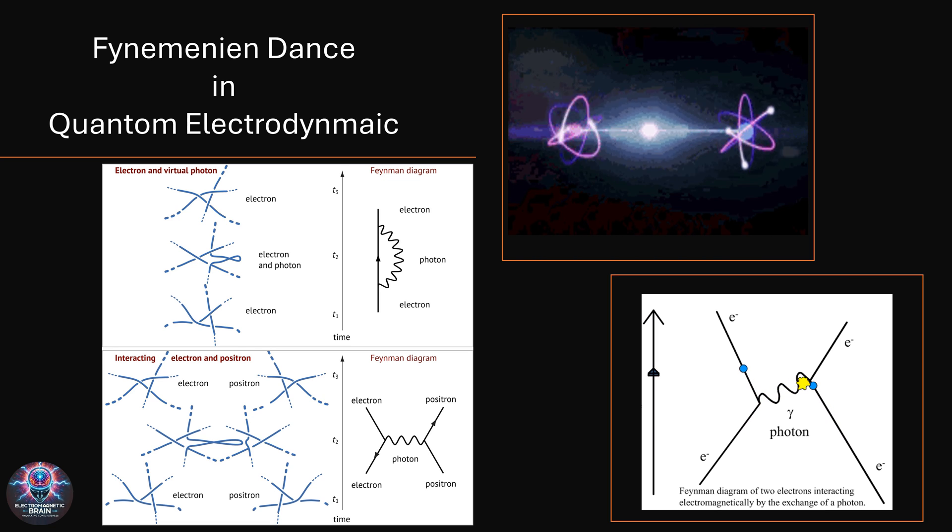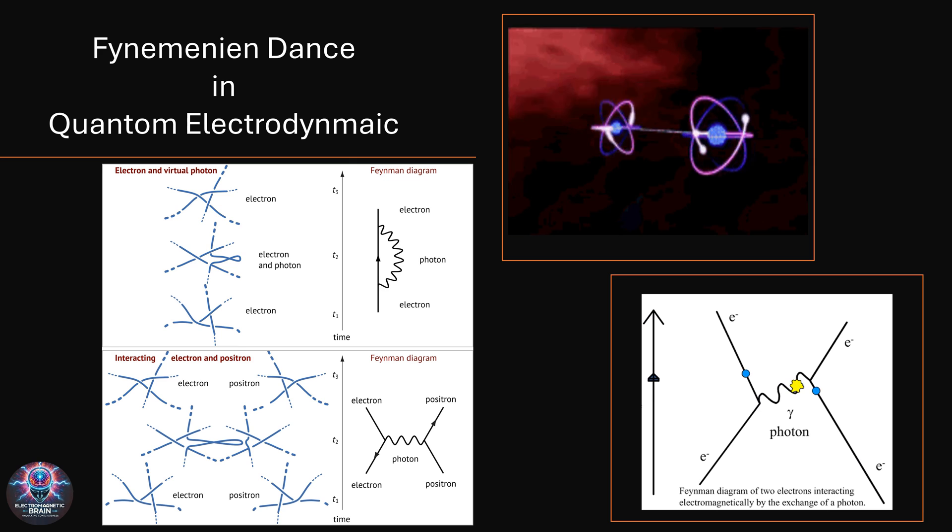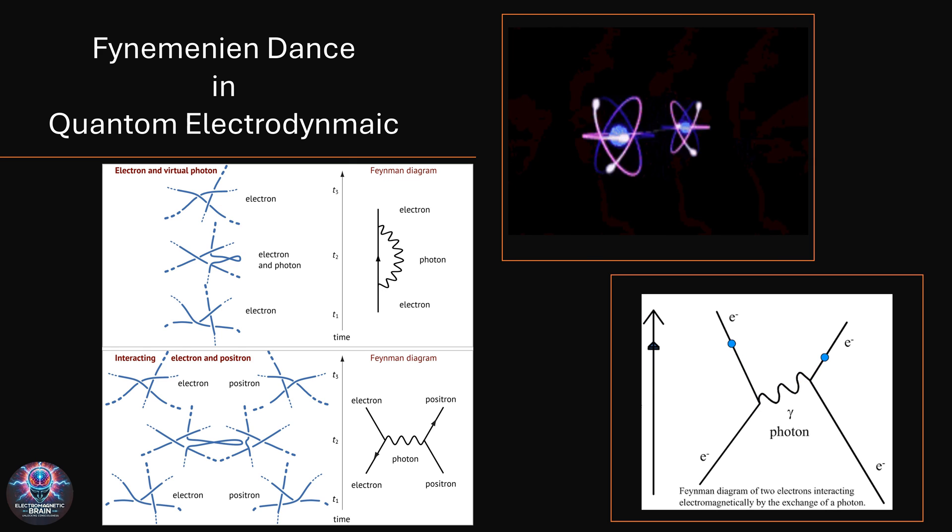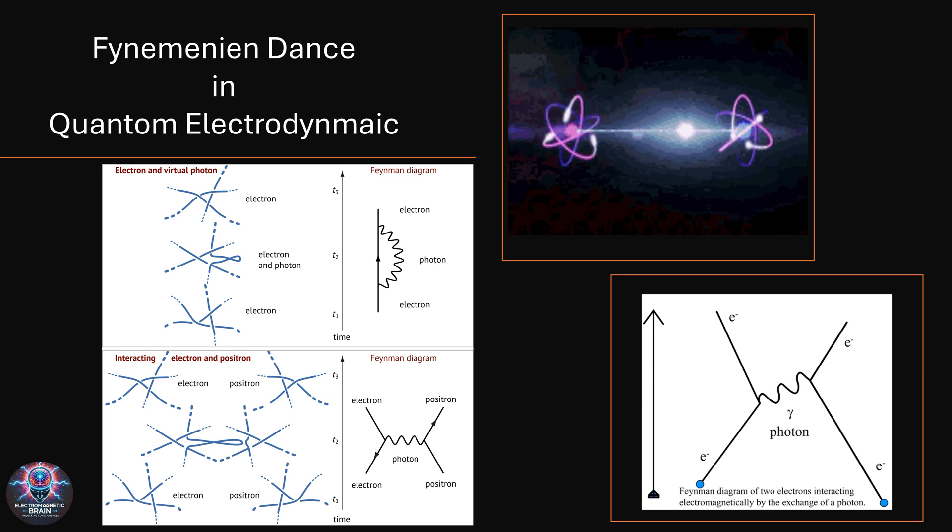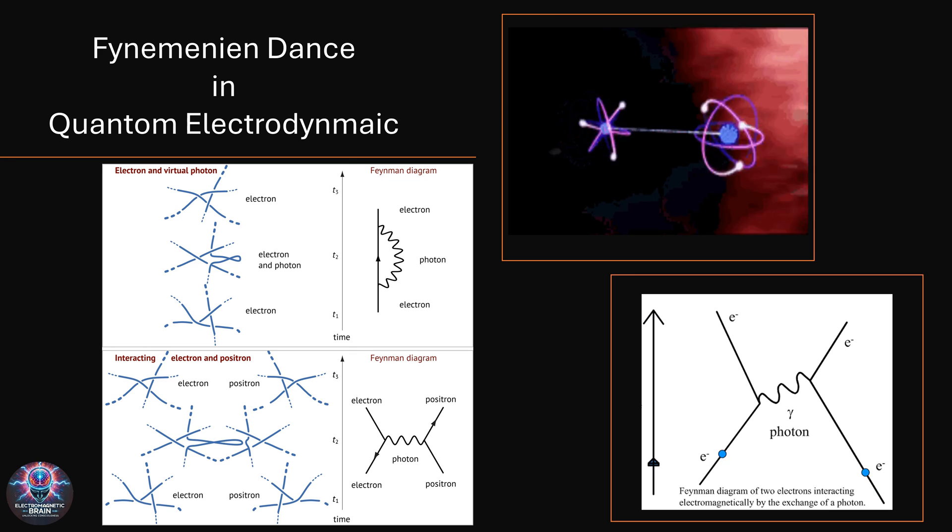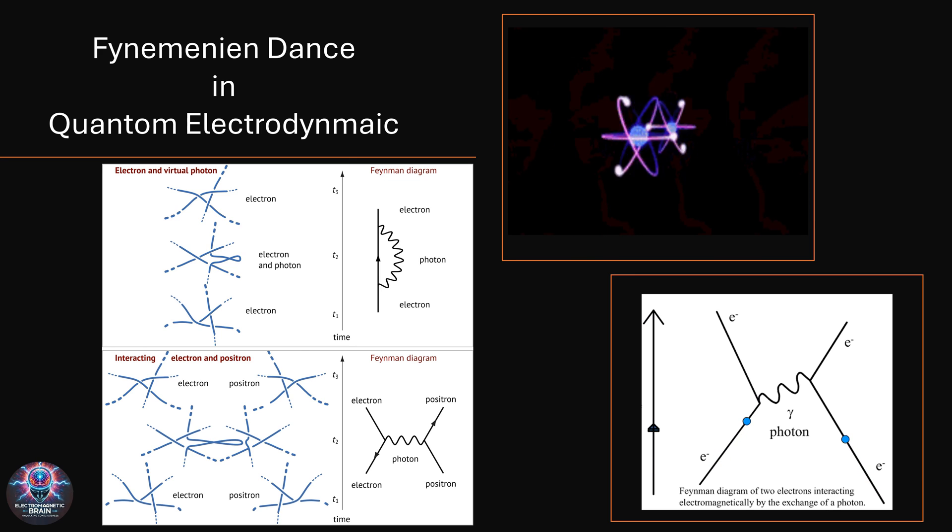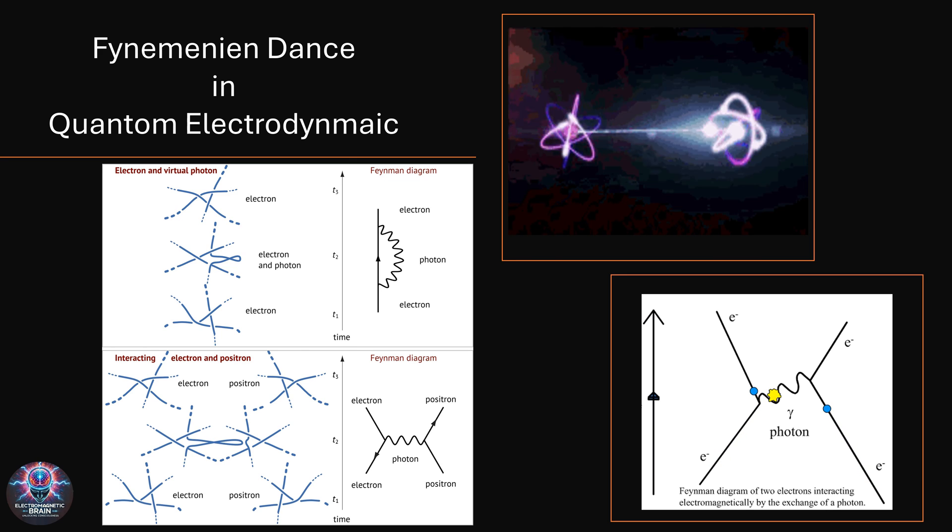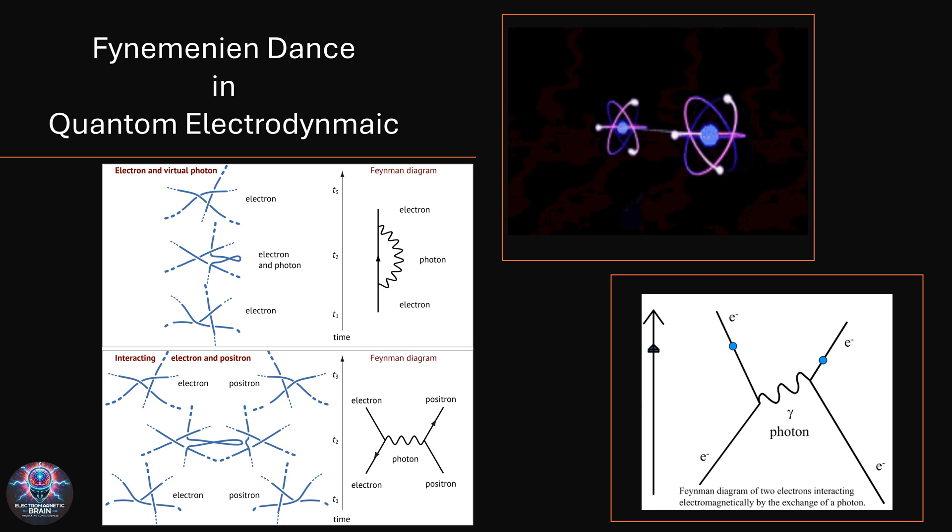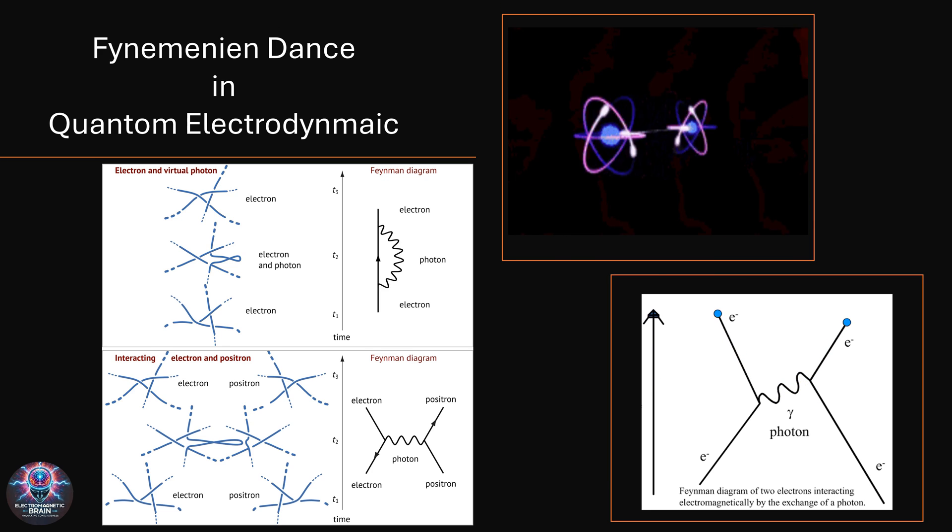So, what have we learned? QED is the most precise and successful theory in physics, explaining how electrons, photons, and even antimatter interact in ways that shape our universe. From the smallest particles to the largest cosmic structures, this quantum dance is always happening, whether we realize it or not.